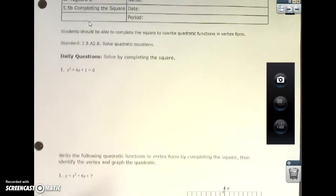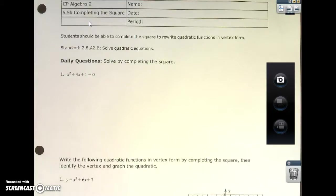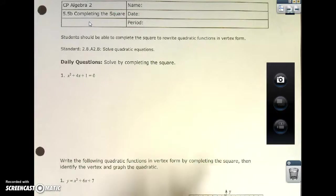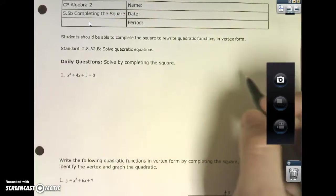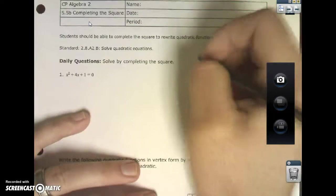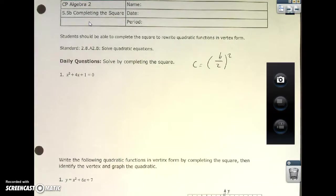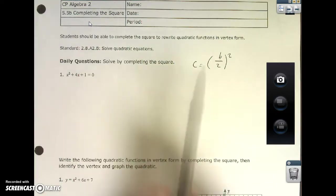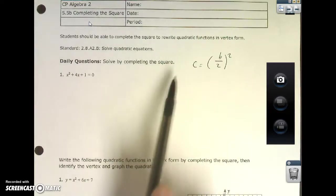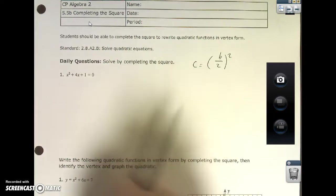Alright, so today I've got for you guys completing the square, and it's the second part of it. I'm going to add one more layer of difficulty to it. So, it's four problems, just four problems to go through, and then I'll let you guys try out your homework. But, just in case you guys forgot from yesterday, we are going to need to know this equation: C equals B divided by 2 to the quantity squared. This is a very important equation because it helps you find that last part that makes you a perfect trinomial.